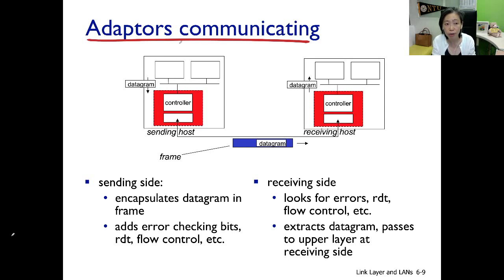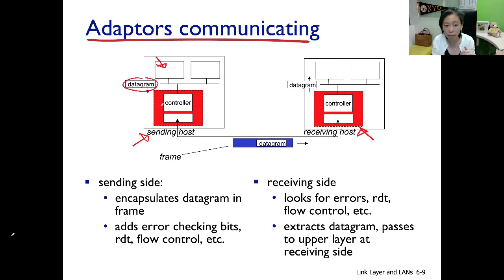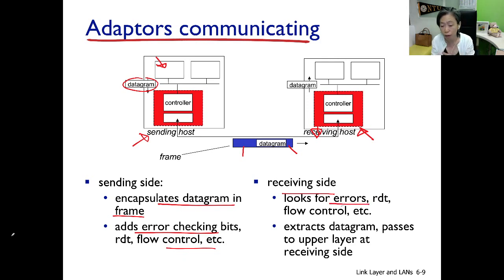This slide illustrates adapter communication. On the left is the sending adapter and on the right is the receiving adapter. The operating system is running here — a process generates some data, which through the network layer comes down as a datagram to the link layer running on the network adapter. The link layer encapsulates the datagram into a frame by adding headers and trailers. This frame travels through the internet, and at the receiving side the link layer extracts the headers and trailers, checks that the link layer functions are satisfied, then extracts the datagram and passes it up to the higher layer.